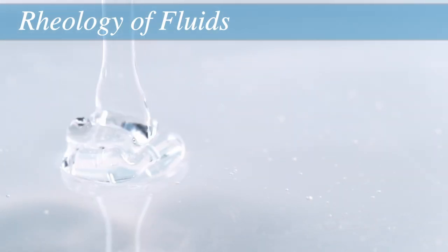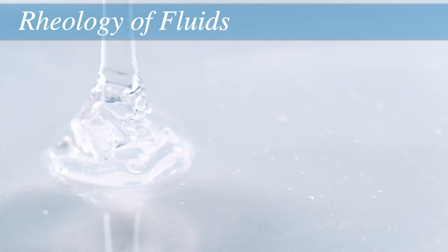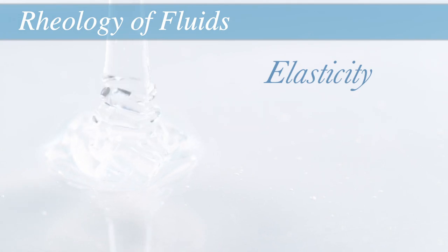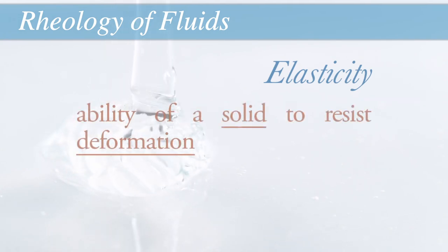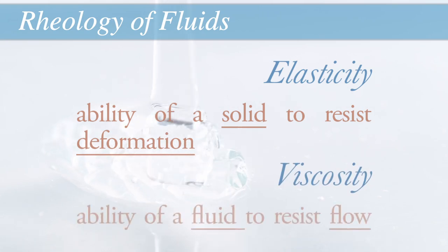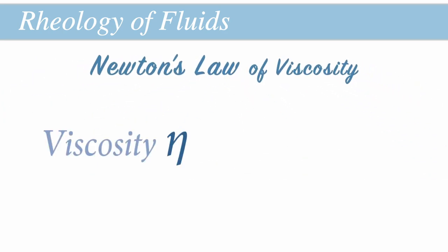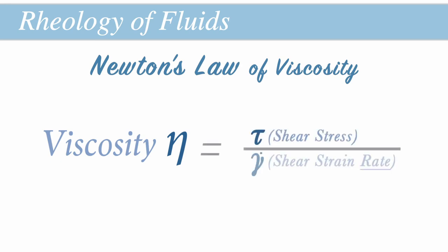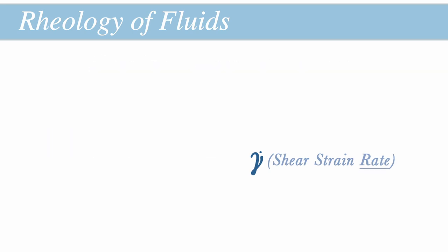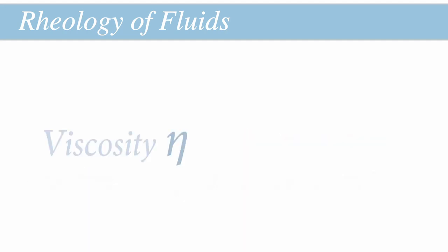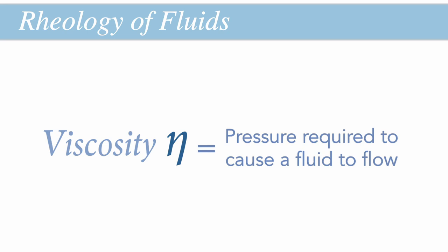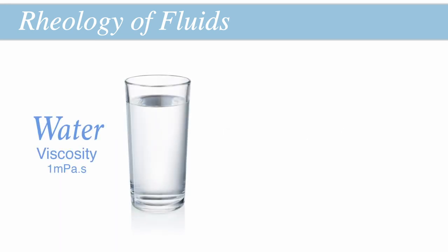Viscosity is what helps us explain the rheological properties and behaviors of fluids. Just like solids are characterized by elasticity — the ability of a solid to resist deformation — fluids are characterized by viscosity, defined as the ability of a fluid to resist flow. Viscosity is described by Newton's law of viscosity, where viscosity is calculated as the ratio of shear stress to the shear strain rate, and has the units of Pascal-seconds. Thus, viscosity is a measure of how much pressure must be applied to a fluid in order to make it flow at a specific rate — a fluid with low viscosity like water flows much more easily than high-viscosity fluids like honey.